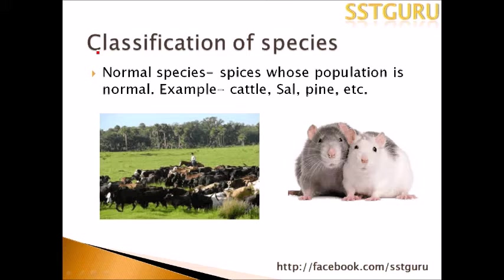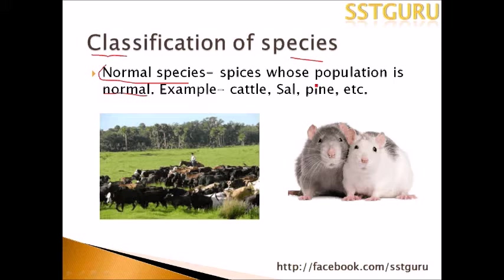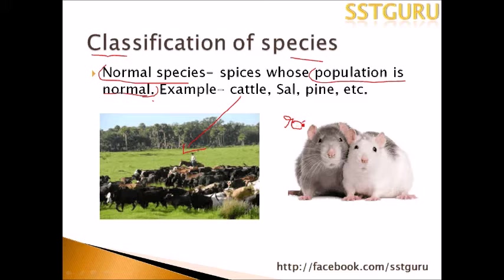Species are classified into many categories. Number one: Normal Species. Normal species are those whose population is at a normal level — it is about population, not the animal's characteristics. For example, cattle, sal pine, etc. The population may go up and down, but it is under control. These are all normal species.